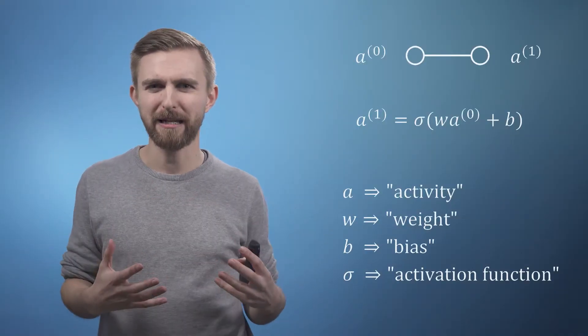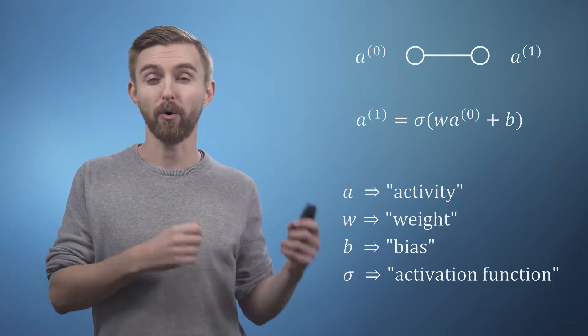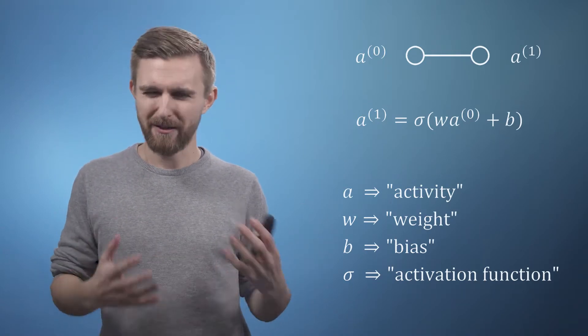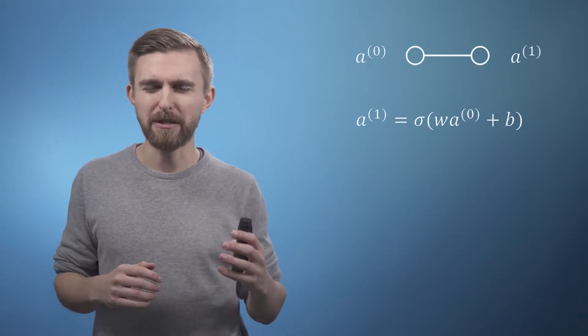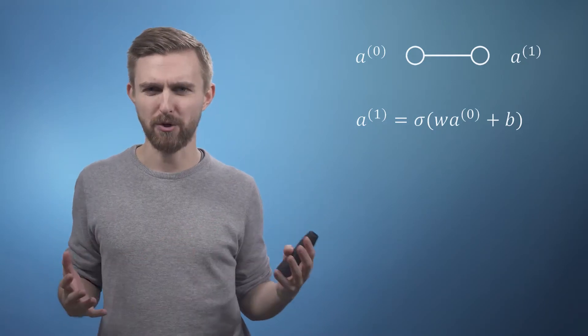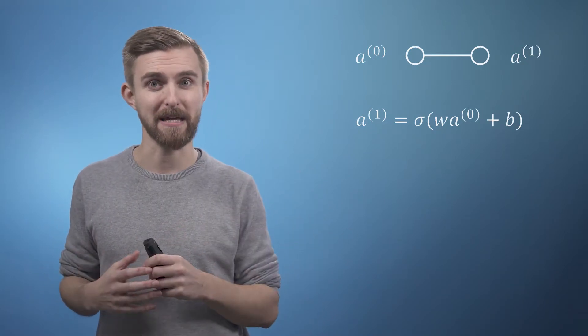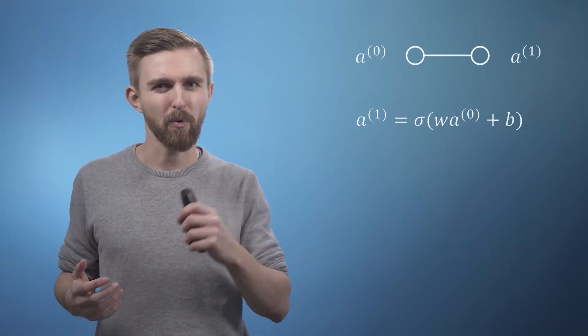So here we are with our nonlinear function that we can evaluate on a calculator and also now know what all the terms are called. At the start of this video I mentioned that neural networks could for example be used for image recognition, but so far our network with its two scalar parameters w and b doesn't look like it could do anything particularly interesting. So what do we need to add?